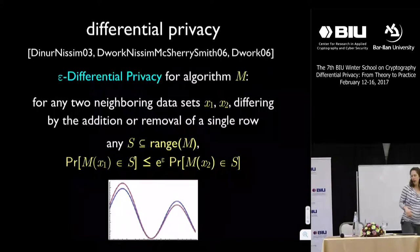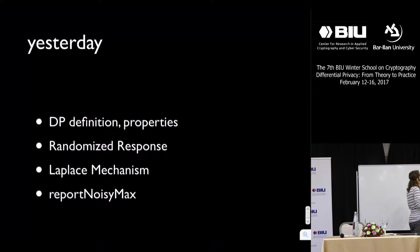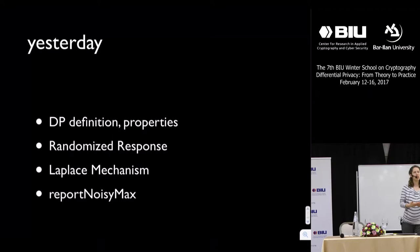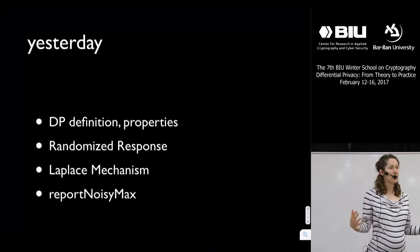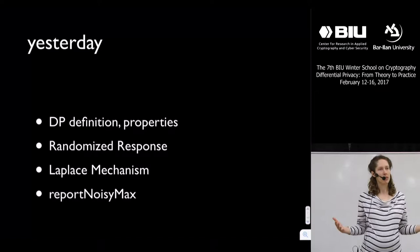Yesterday afternoon, after getting familiar with this definition, we saw a couple of first algorithms that achieve differential privacy. We ran the randomized response algorithm and found out there are a lot of cheaters in the room. We learned about the Laplace mechanism — a way of doing direct noise addition to a numeric answer or vector of numeric answers to preserve privacy. At the end, we had the report-noisy-max algorithm, motivated by wanting to find the most liked page on Facebook — finding the best among a set of alternatives. That's the jumping-off point for today.